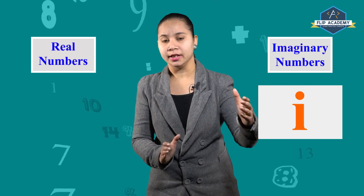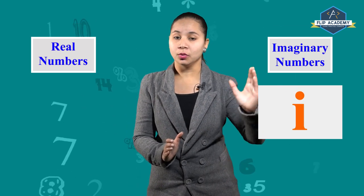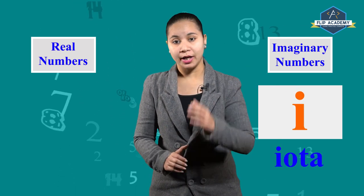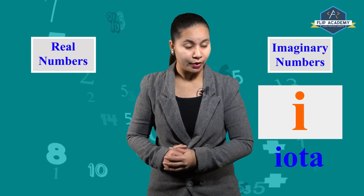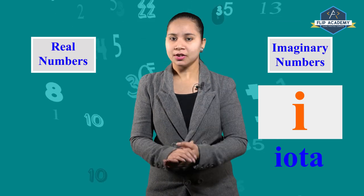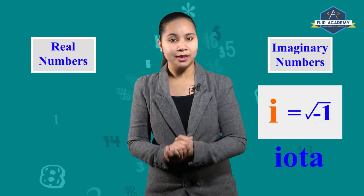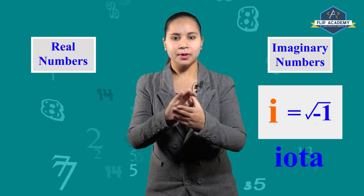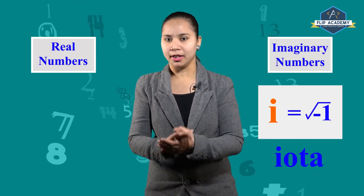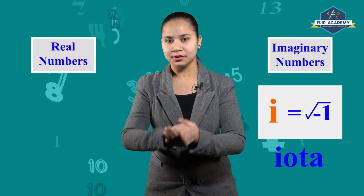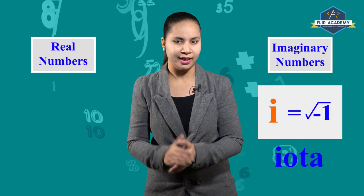What is i here? i is known as iota. Iota ki value kya hogi? Square root of minus 1. But imaginary numbers ke baare mein aap further classes mein study karenge.